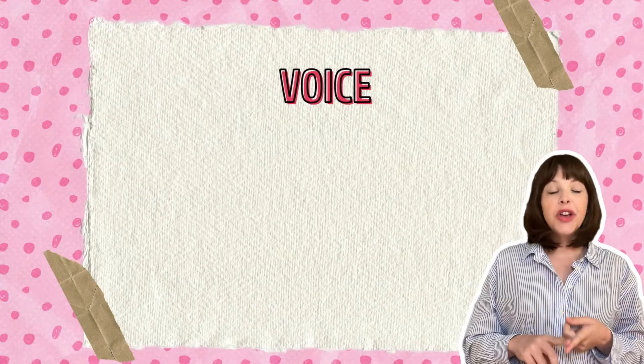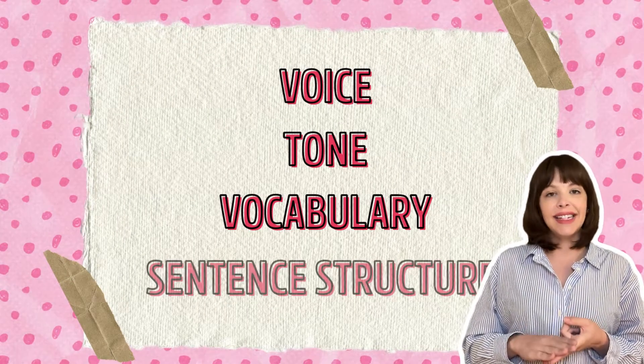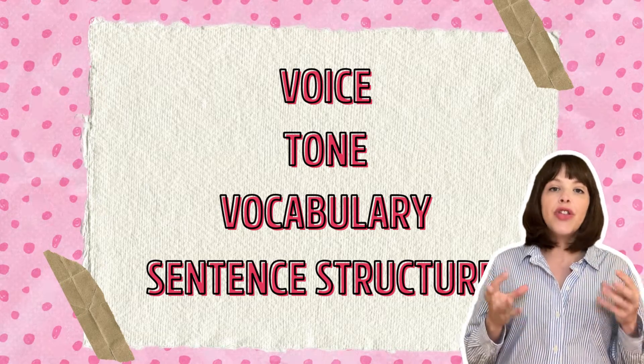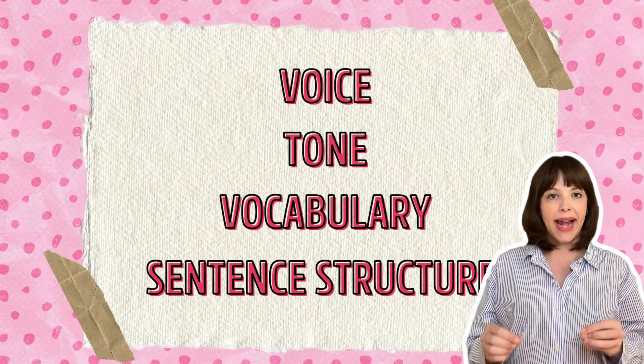We're going to break voice down into four categories for the purpose of getting ChatGPT to recognize the correct elements of voice in our writing. Those elements are: voice, tone, vocabulary, and sentence structure. Together, those four elements are going to make up the style guide for your writing. When we talk about voice, we're talking about the container of the personality of your writing.